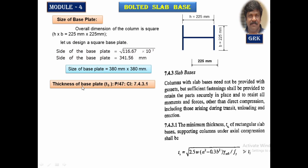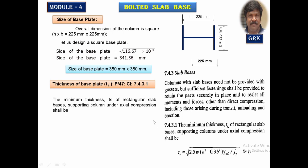Now let us find the thickness of the base plate as per IS 800 clause 7.4.3.1. It states that the minimum thickness of the base plate shall be equal to √(2.5 × W × A² × γM0 / fy), where W is the net upward pressure exerted on the base slab, A and B are the larger and smaller projections of the slab, γM0 = 1.1, and fy = 250 N/mm². This value should always be not less than the thickness of the flange.